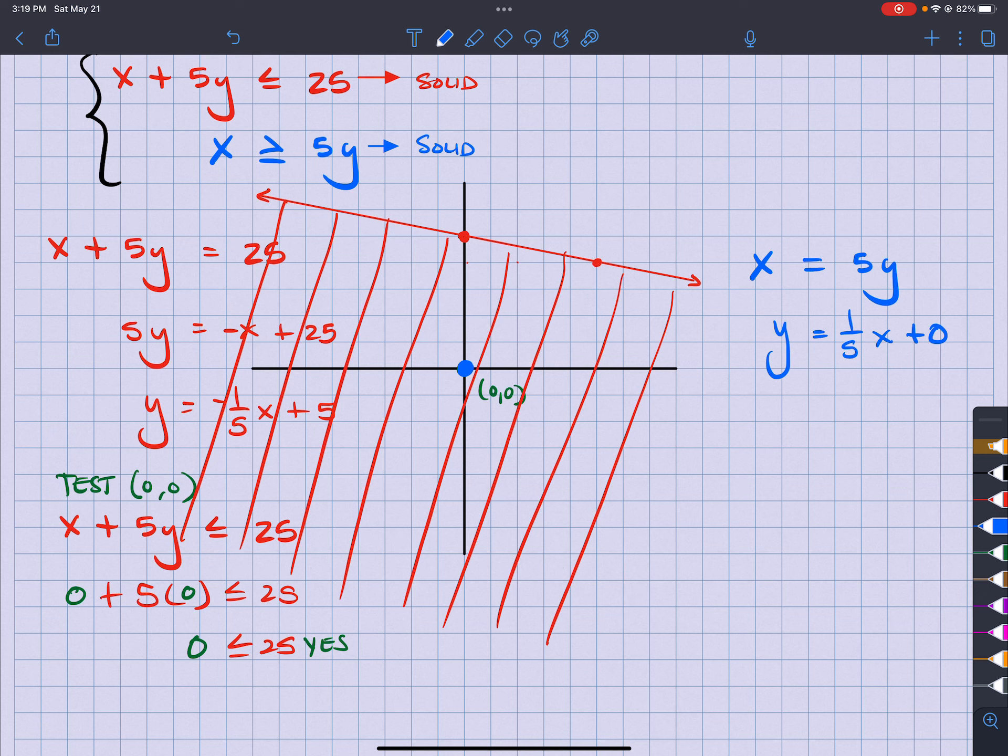And then my slope is up 1 right 5, up 1 right 5. 1, 2, 3, 4, 5. So I'm going to have this line right here.